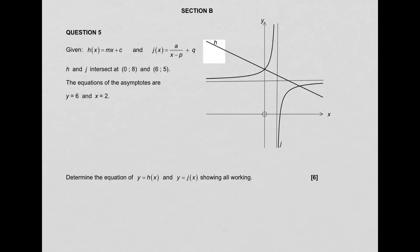Section B: given h(x) equals mx plus c (a straight line) and j(x) equals a over (x minus p) plus q (a hyperbola). They tell us h and j intersect at (0, 8). Since x equals 0, that's a Y-intercept. The second point of intersection is (6, 5). The equations of the asymptotes are Y equals 6 and X equals 2 — write this information onto your diagram.